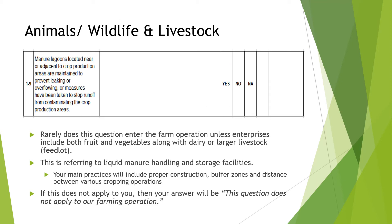Animals, Wildlife, and Livestock 1-9: Manure lagoons located near or adjacent to crop production are maintained to prevent leaking or overflowing, or measures have been taken to stop runoff from contaminating crop production areas. Rarely does this question enter the farm operation unless enterprises include both fruit and vegetable production along with dairy or large livestock feedlots. This refers to liquid manure handling and storage facilities. Main practices include proper construction, buffer zones, and distance between cropping operations. If this does not apply to you, your answer will be: 'This question does not apply to our farming operation.'